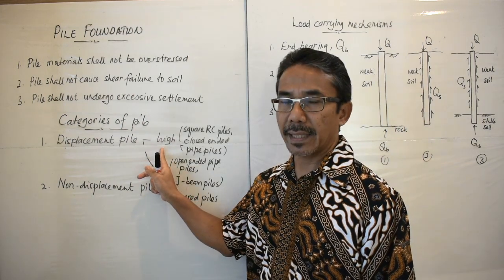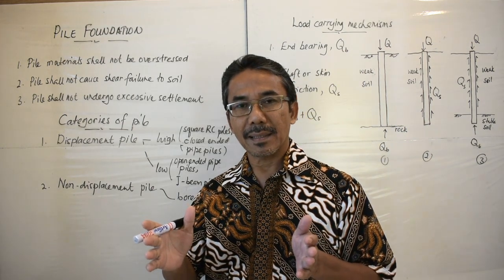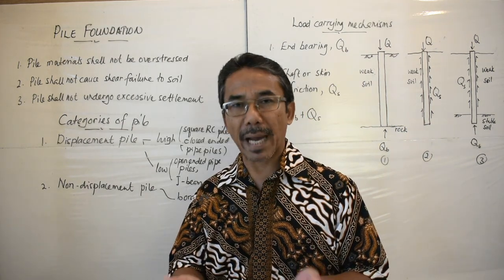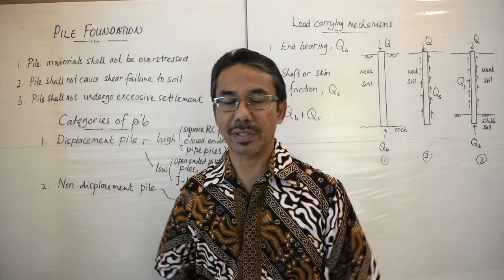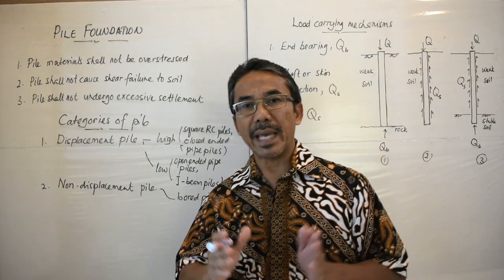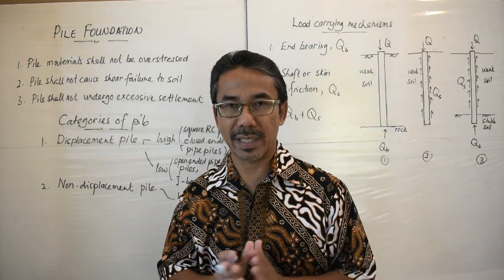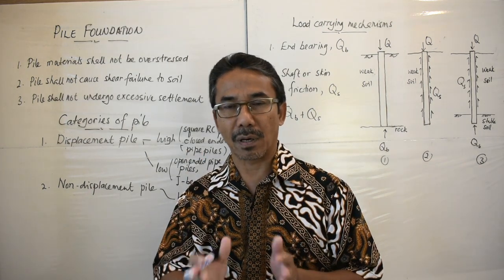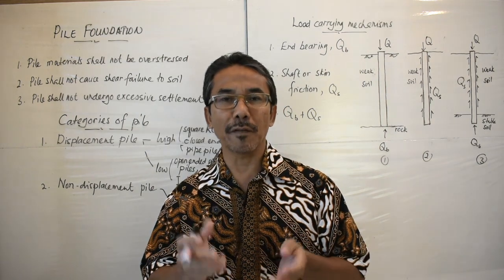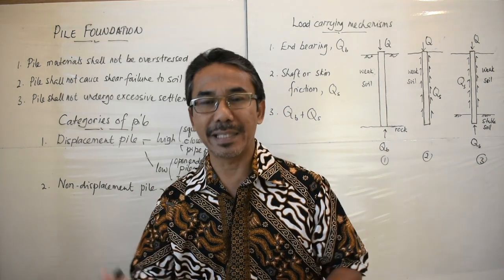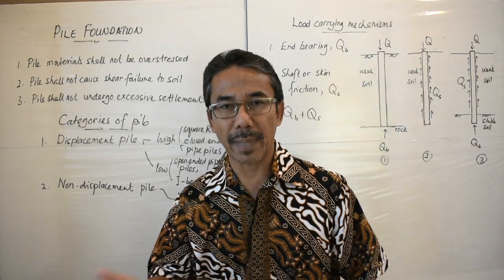For high displacement pile, imagine a square pile or a close-ended pipe pile being driven or jacked into the soil. There will be a lateral movement of soil during the installation. The magnitude or volume of soil being displaced laterally during installation is large. That's why we call it high displacement pile.